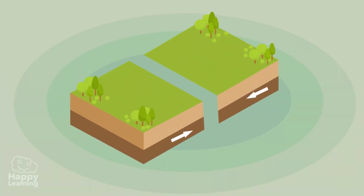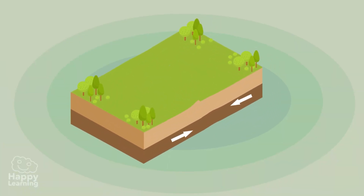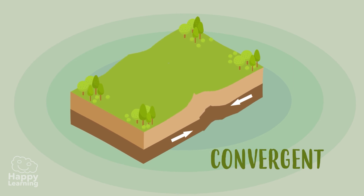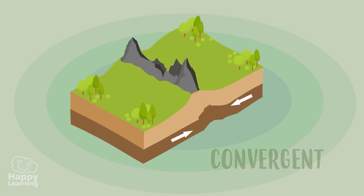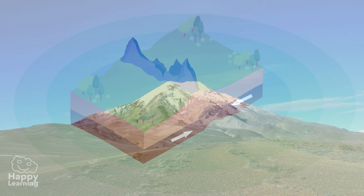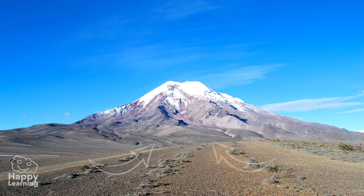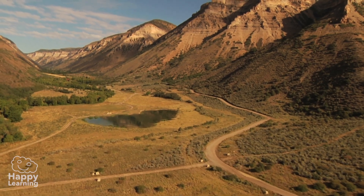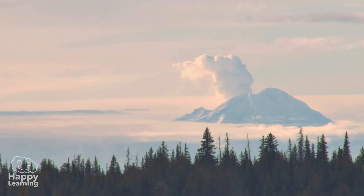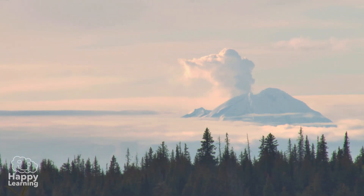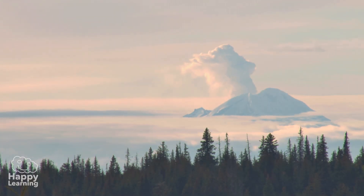When the tectonic plates bump into each other, they are called convergent plate boundaries and form a collision area where new mountains or mountain ranges like the Himalayas or Alps are formed. They can also trigger volcanoes and earthquakes.